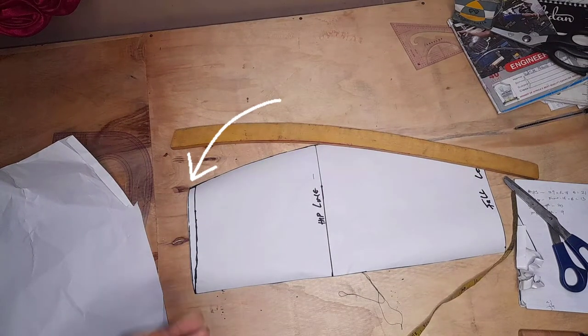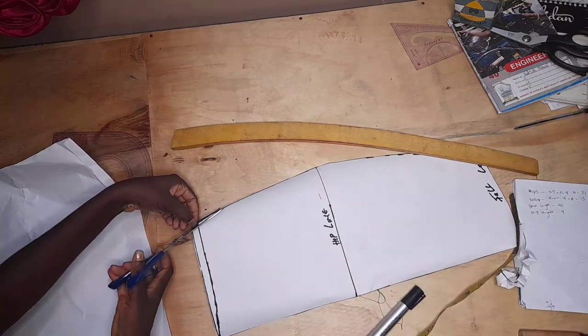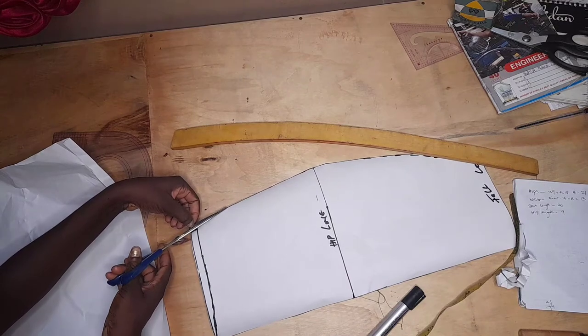On the waistline, I went down by one inch and then I connected it to the center front line. And that's all I did for the front. Now we're moving to the back.